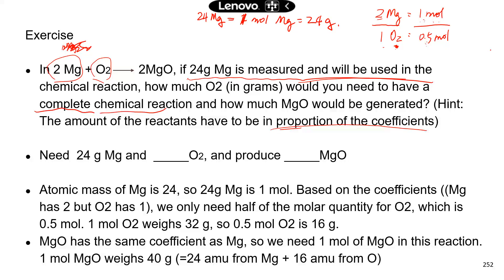The coefficient of oxygen is half that of magnesium. So if you have one mole of magnesium, oxygen is half of that, which is half a mole. Oxygen weighs 32 grams per mole, so 0.5 times 32 is 16 grams.